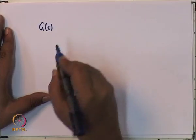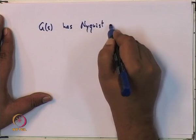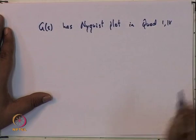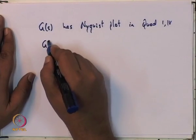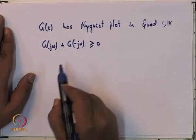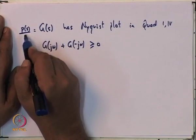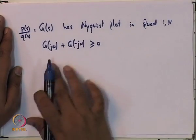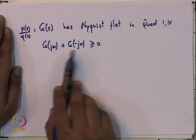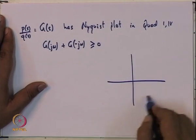Let us take the definition that G has a Nyquist plot in quadrants 1 and 4. This is the same as saying G plus G* is greater than or equal to 0. In this case, G is a single input single output transfer function. So that means when you evaluate the transfer function along the imaginary axis, the image of the imaginary axis lies in the right half of the complex plane.